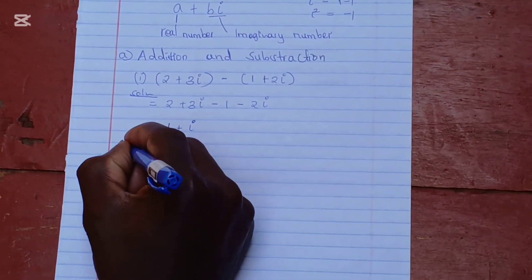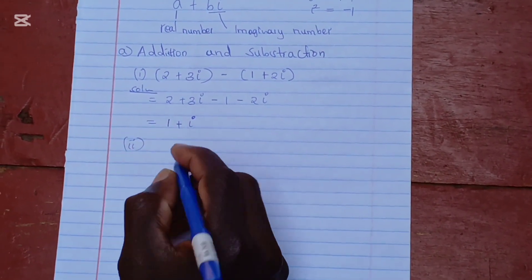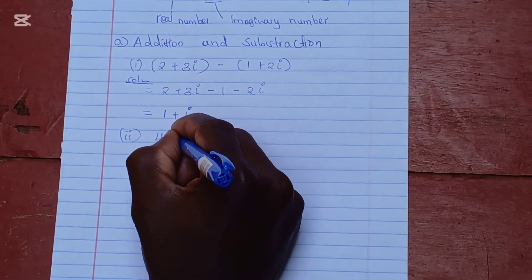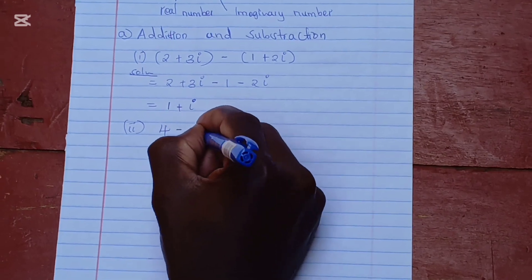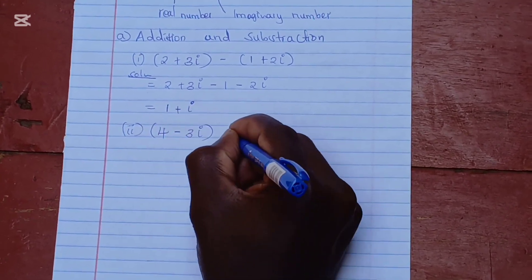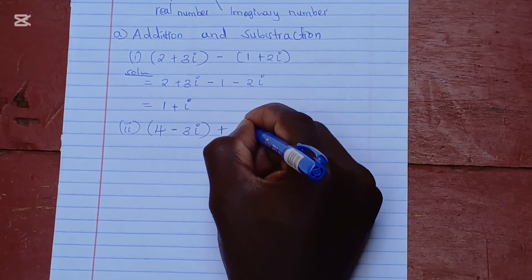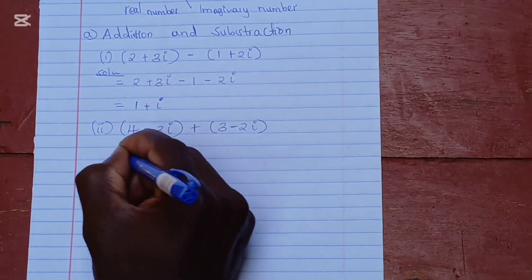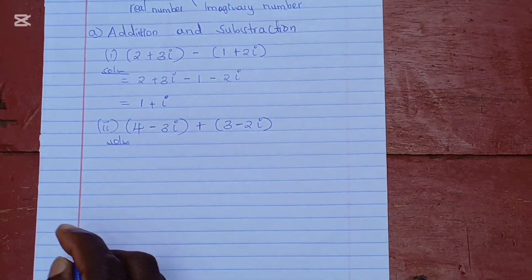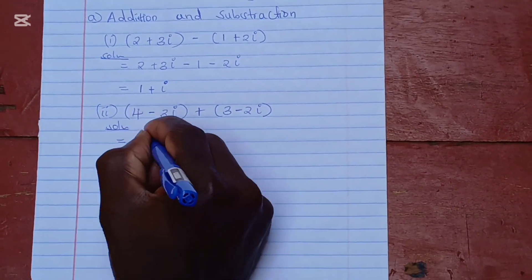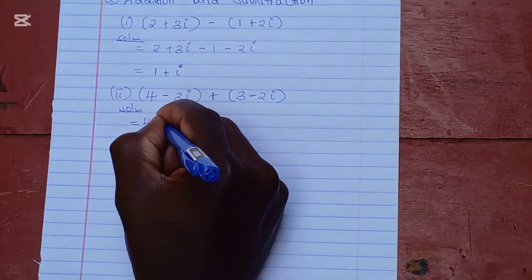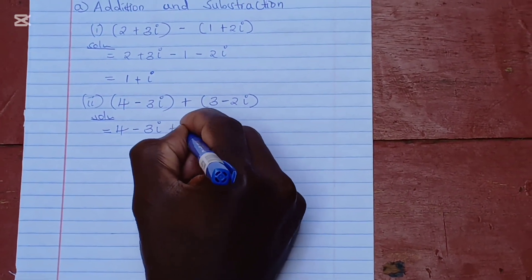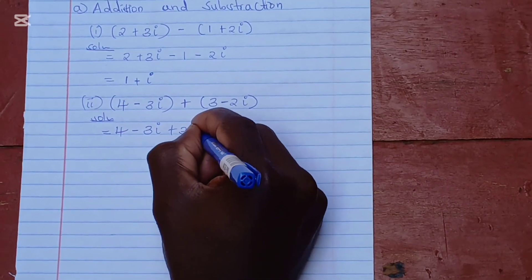Let's look at another example. Let's say 4 minus 3i, we add 3 minus 2i. Opening the brackets gives us 4 minus 3i plus 3 minus 2i.